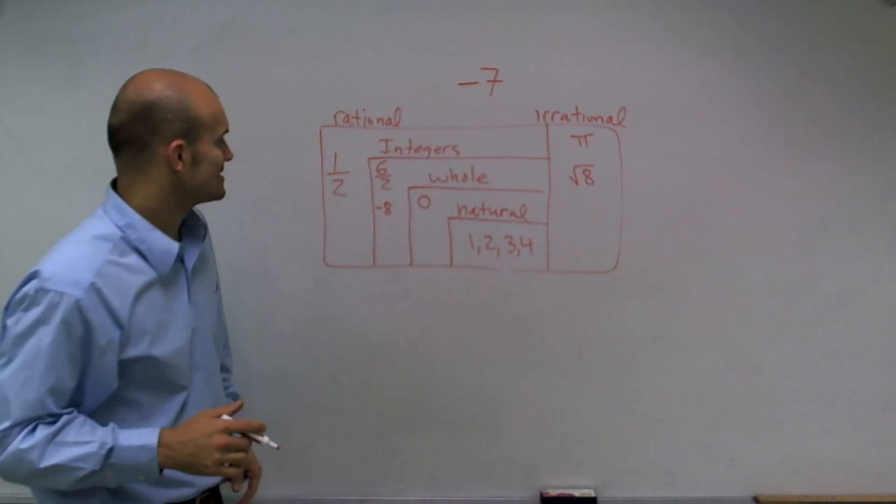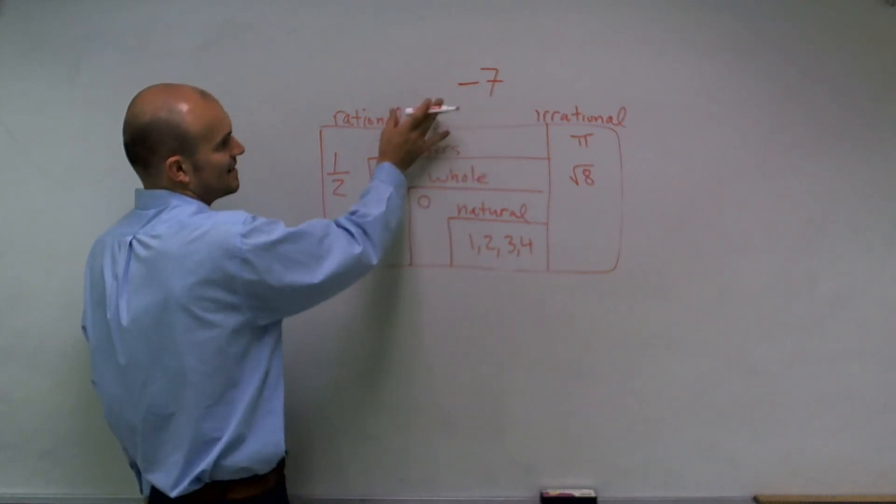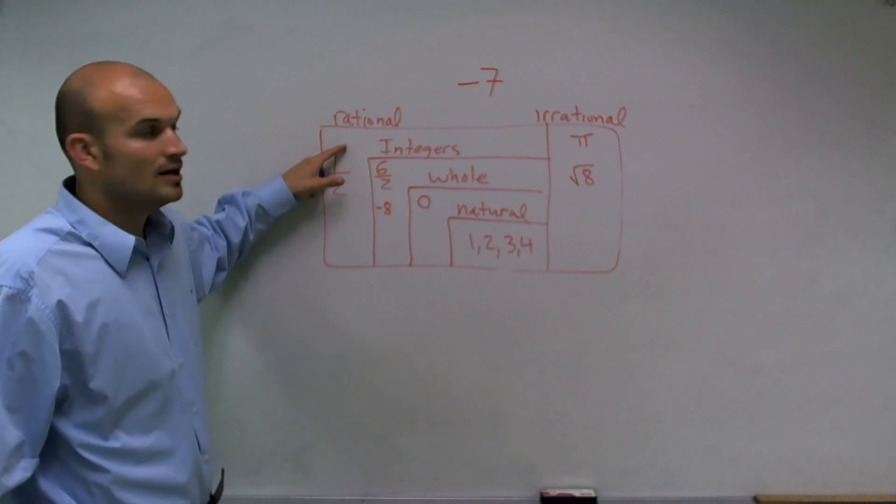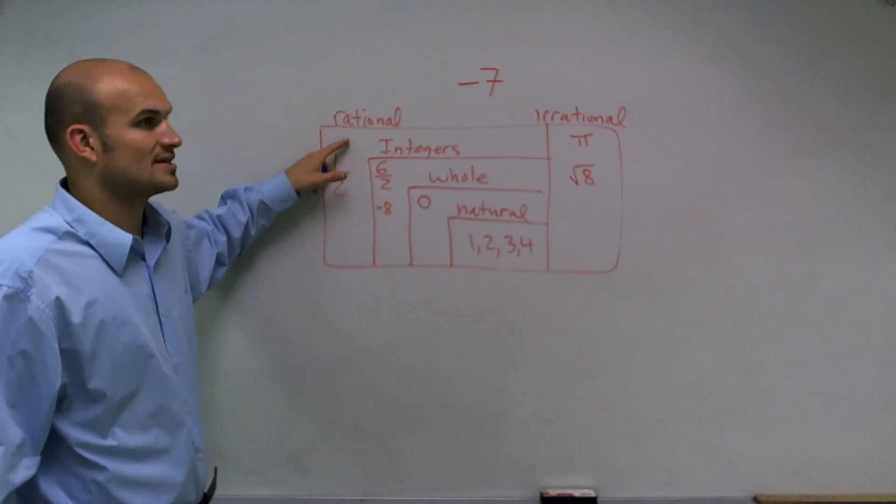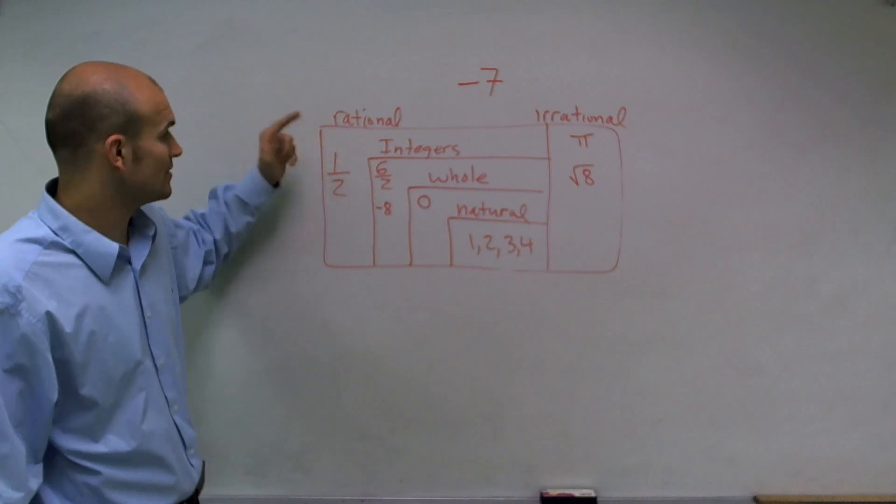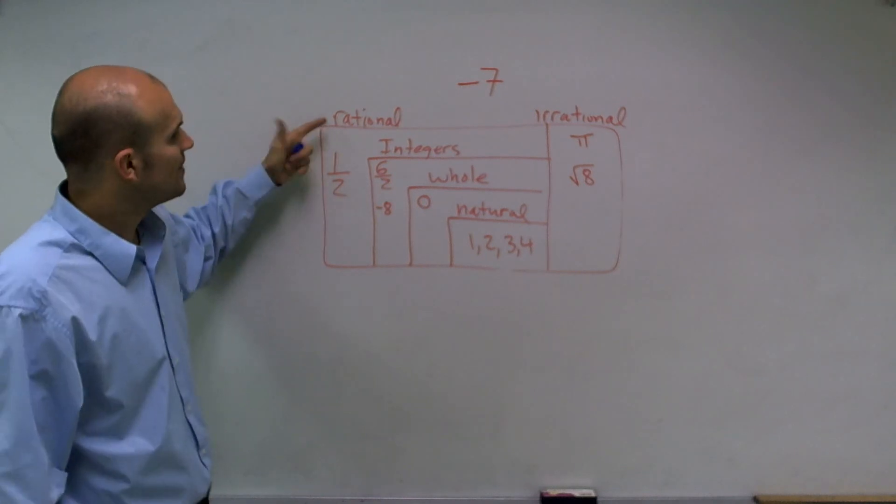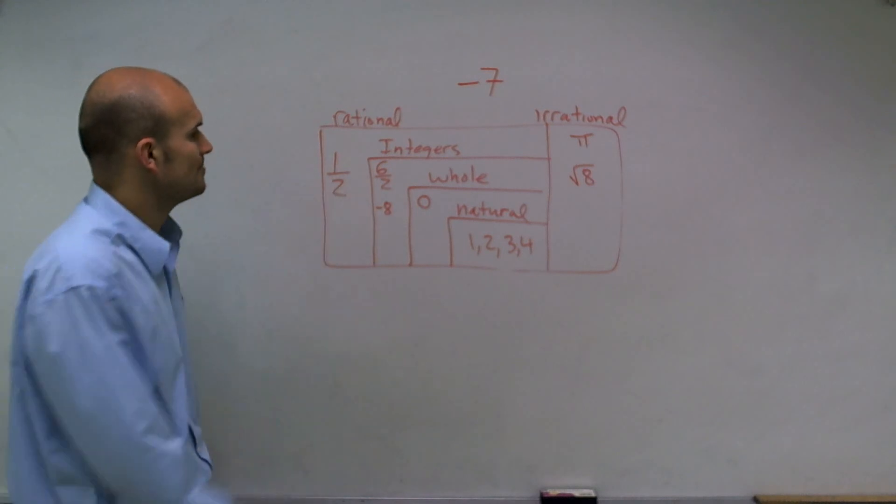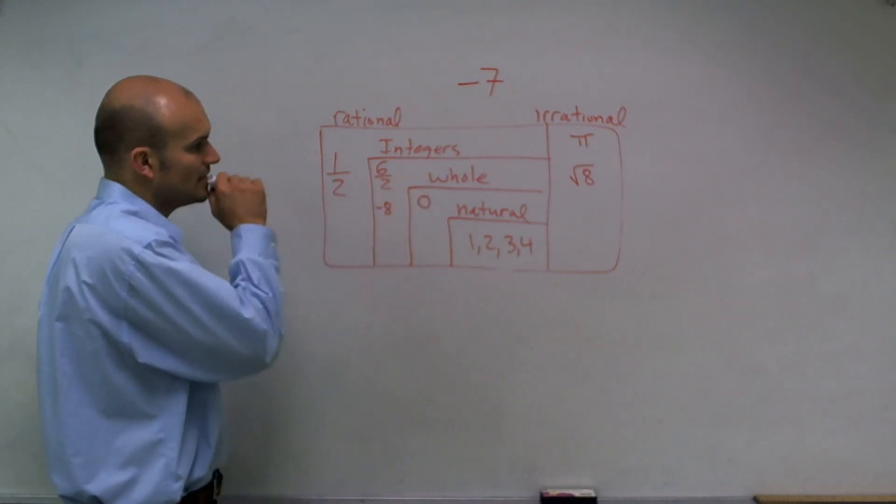So when I look at negative 7, I say, all right, is negative 7, it's honestly on the rational side. It's definitely a rational number. I can rewrite negative 7 as a fraction. I can rewrite it as like negative 14 divided by 2. I can write it as negative 7 over 1. Then I look at it, it's definitely an integer. Because I can rewrite it as a negative number.